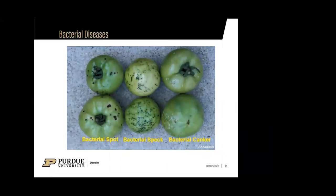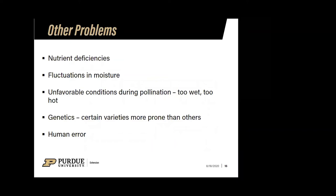There are always other problems you'll face with tomatoes: nutrient deficiencies, fluctuation in moisture, unfavorable conditions during pollination — too wet or too hot — genetics, and of course there's always room for human error.